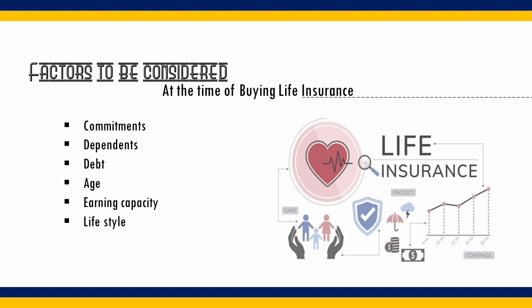Insurance is not just for human beings — it is not just life insurance. Insurance also exists for non-life things, and non-life insurance is also called general insurance. We have only two forms of insurance: life insurance and non-life insurance, which we call general insurance. In general insurance you have property insurance, health insurance, and other examples of non-life insurance.